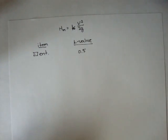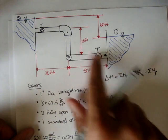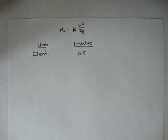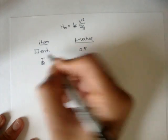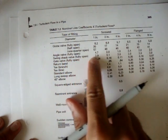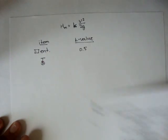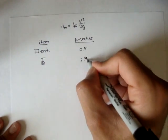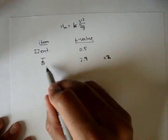If we continue, we have two fully open swing check valves. A fully open valve - its k value on the table here, swing check valve fully open and one inch, is 2.9. So we'll write that there. And just to clarify, there's - I'll say two, or times two, meaning there's two of those valves.